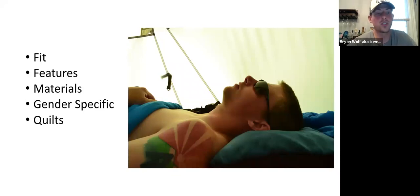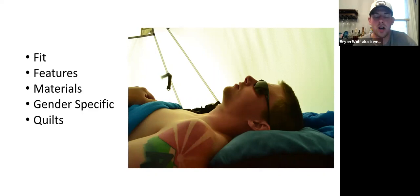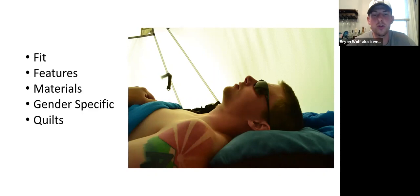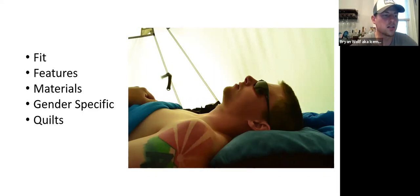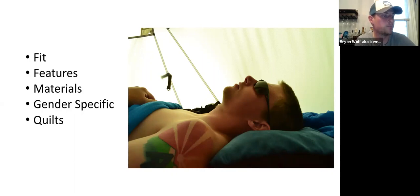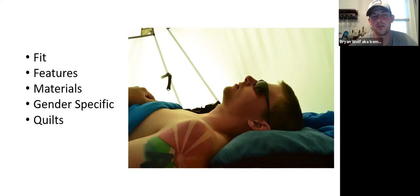Quilts are also worth looking at — not just under quilts for hammocks, but in general. Quilts are a nice ultralight option that essentially removes the bottom portion of the sleeping bag, helping to reduce weight and pack size. The thought process is that you're compressing the insulation below you when you sleep, so it's not getting its full insulating value anyway. Most quilts are warm-weather specific, although they do make some cold-weather quilts as well. I suggest getting one that has at least a foot box option, and it's nice to get a quilt that straps around your sleeping pad so it doesn't fall off in the middle of the night.